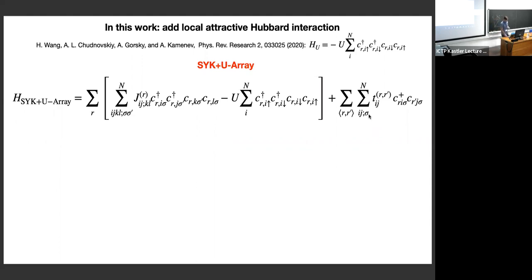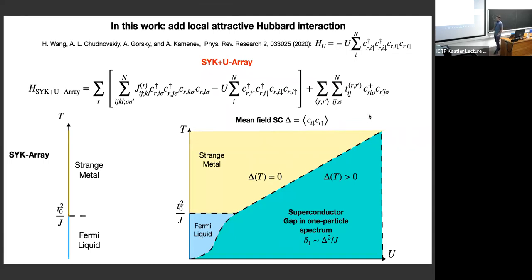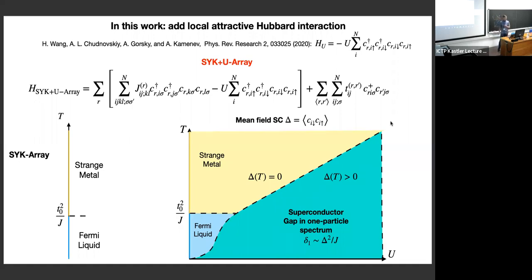The simplest way to deal with this model is mean field. For comparison, the SYK array without the Hubbard term has only two phases: the Fermi liquid phase and the strange metal phase, differing in the temperature dependence of resistivity. As soon as you introduce a superconducting order parameter — the anomalous average of on-site electrons forming a local Cooper pair — and solve the mean field equations, you obtain a phase diagram where, even for infinitesimally small U, you immediately get a finite amplitude of the superconducting order parameter.